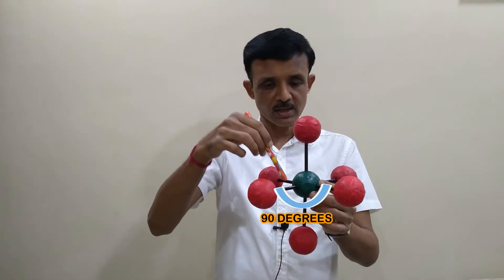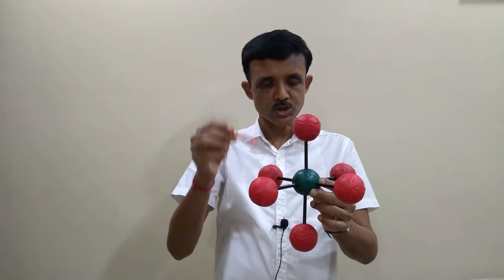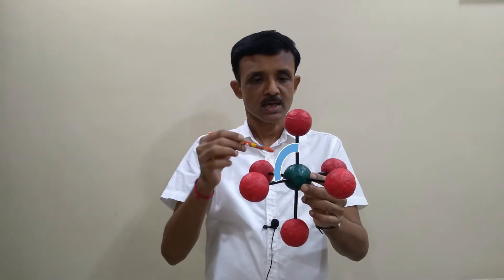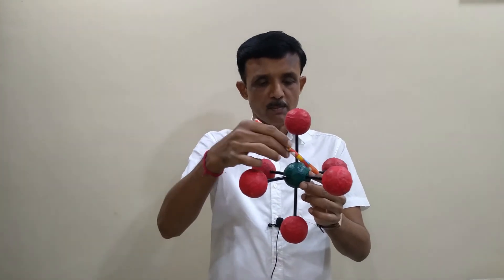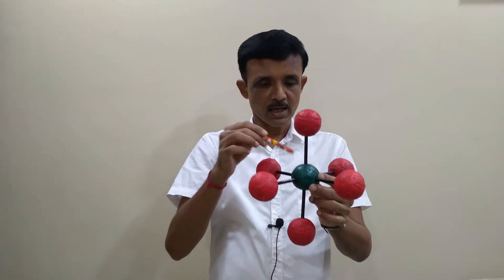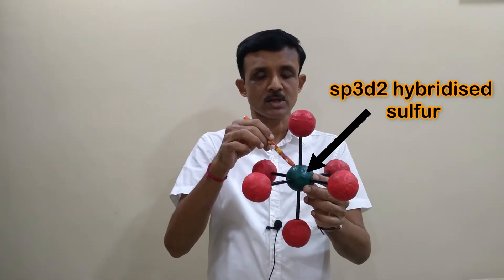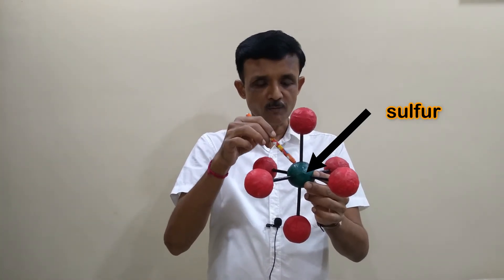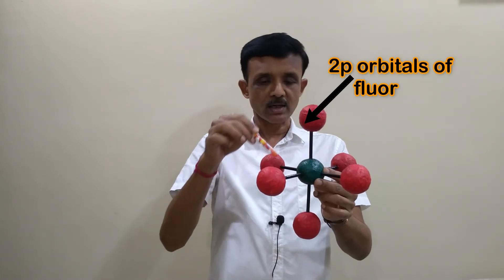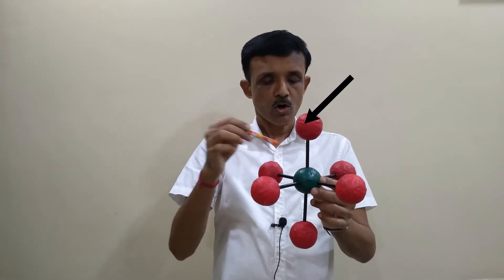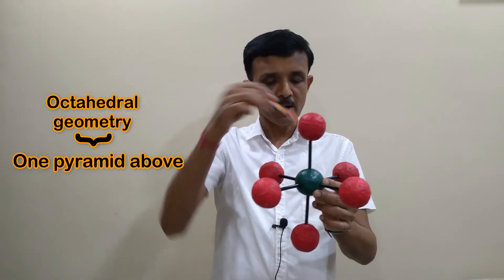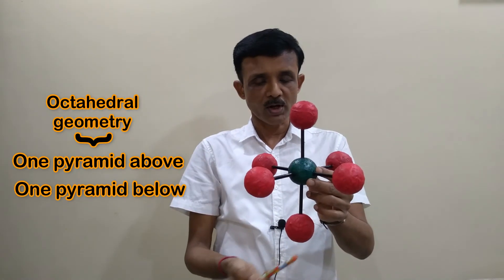SF6 is non-polar in nature. The bond angle is 90 degrees in the square planar base and also 90 degrees with the axial bonds. Six sigma bonds are formed by using sp3d2 hybridized sulfur and the 2p orbitals of the fluorine atoms.